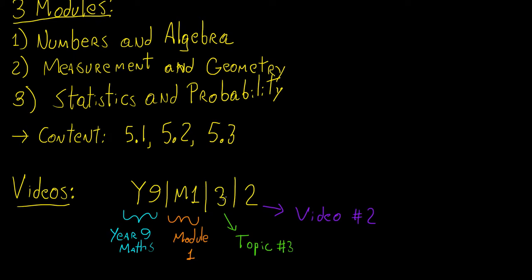The third term is a single number denoting the topic. There is a sequence of topics within each module, and this number tells you which topic it is — everything will be done in sequence so you won't have trouble finding the videos in the correct order. Finally, the last number tells you which video it is within that topic. For example, you would read a code as: the second video of the third topic of module 1 in year 9 mathematics. This should help you find those videos, and I'm going to upload them in the right sequence, one after the other.